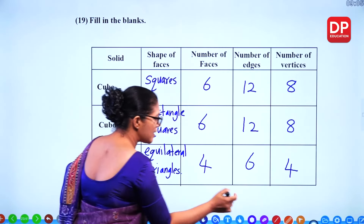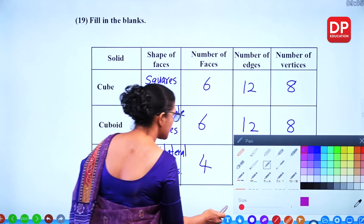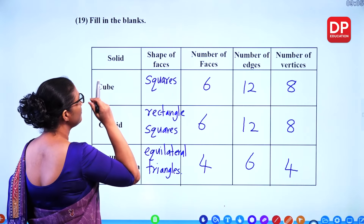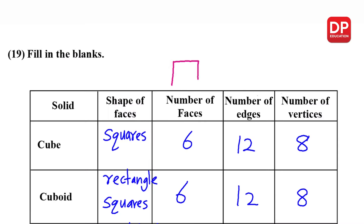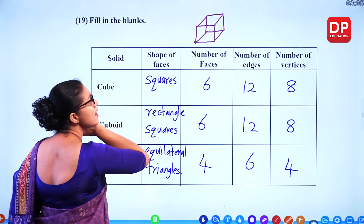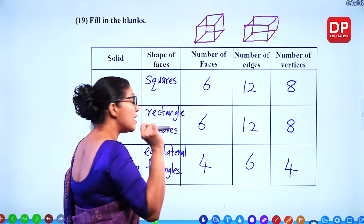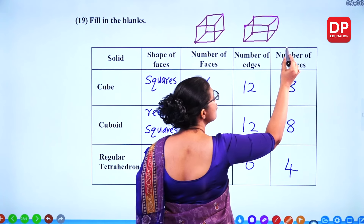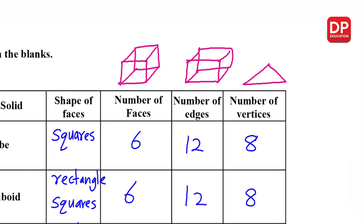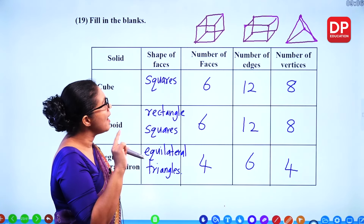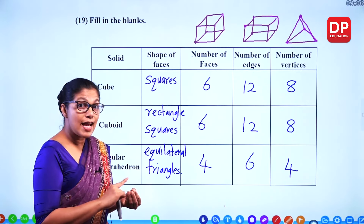Here is an easy way to draw these figures. To draw a cube, draw two squares and connect the four corners. For a cuboid, draw two rectangles and connect them. To draw a regular tetrahedron, draw a triangle and mark a point above it, then connect the lines. From the drawing you can figure out the number of faces, edges, and vertices.